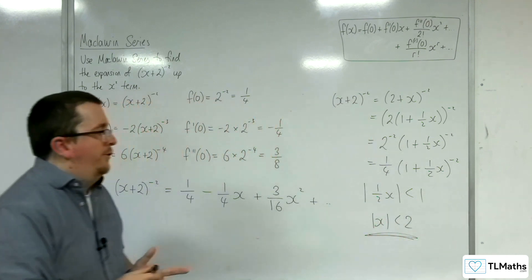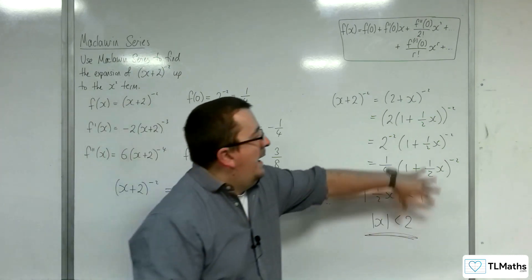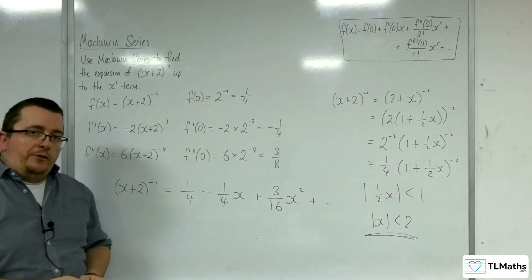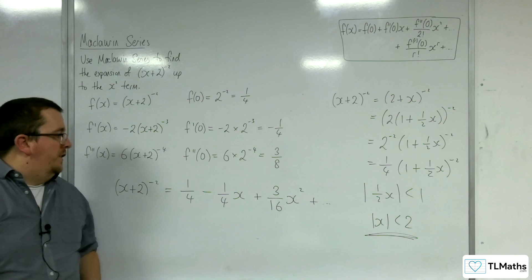So that's the range of values for which this expansion is valid. So all of that is coming from second year A-level maths binomial expansion, whereas this method is further maths material.